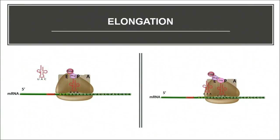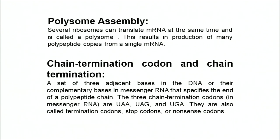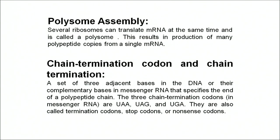Methionine attaches to phenylalanine, and the ribosome slides over the messenger RNA, freeing one pocket of the larger subunit for the next tRNA. That is how the chain keeps elongating, adding more amino acids to the polypeptide chain. Several ribosomes can translate the messenger RNA at the same time — this is called a polysome — resulting in the production of many polypeptide copies from a single messenger RNA.